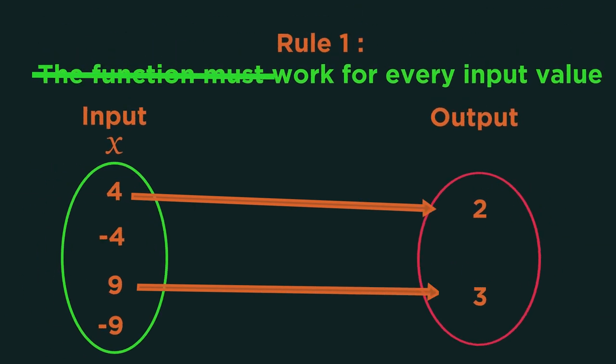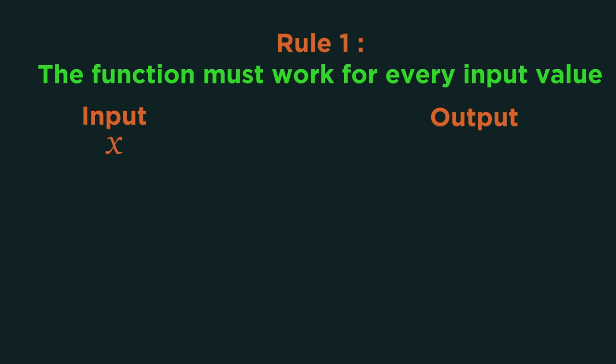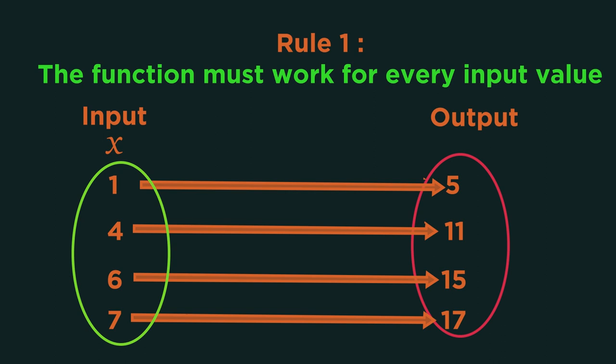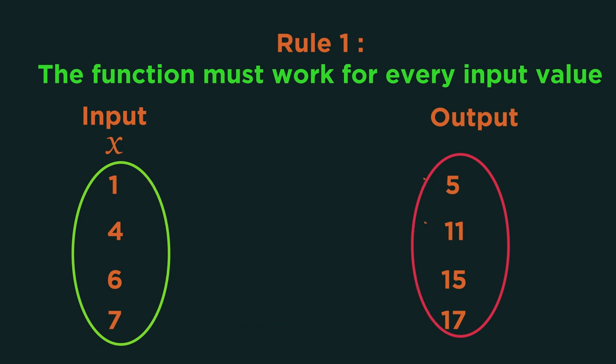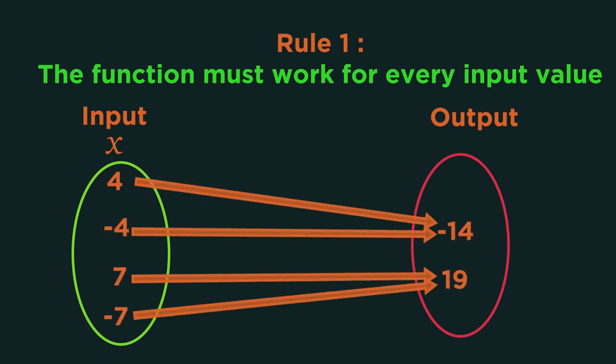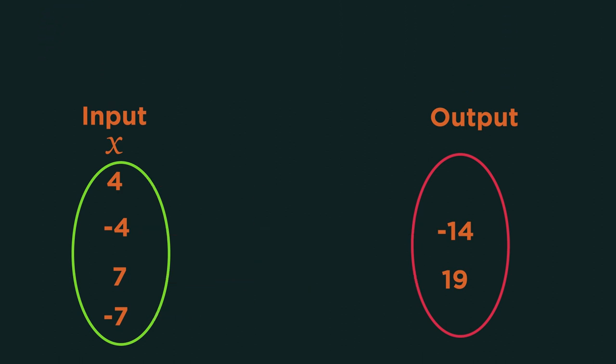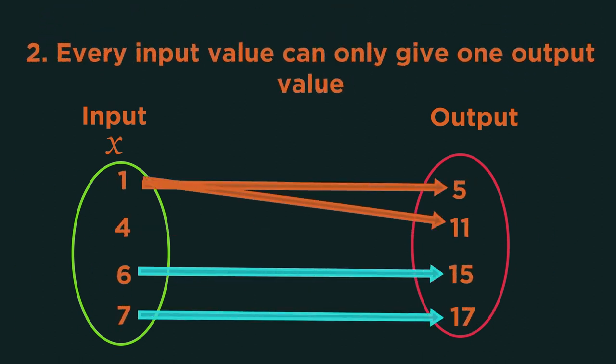This is not a function because when we input -4 and -9 we don't get an output. This would be a function because every input of x has an output. This is also a function because inputs can share outputs. But this would not be a function because an input of one can't have multiple outputs.